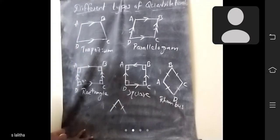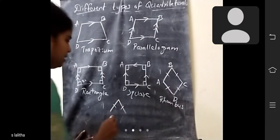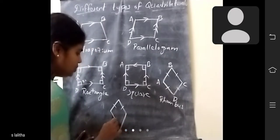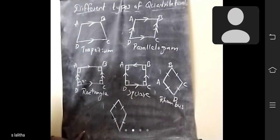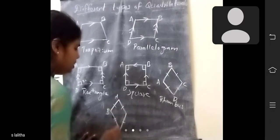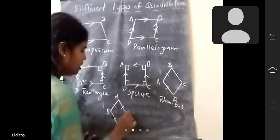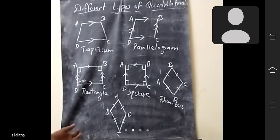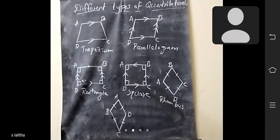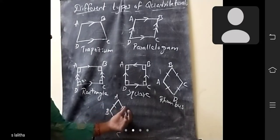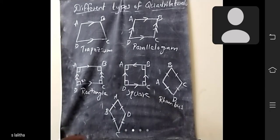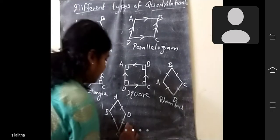Another one: here these two sides are equal, and these two sides are equal. This is called a kite. A, B, C, D. In the kite, two adjacent sides are equal — these two sides are equal and these two sides are equal. This is called kite.